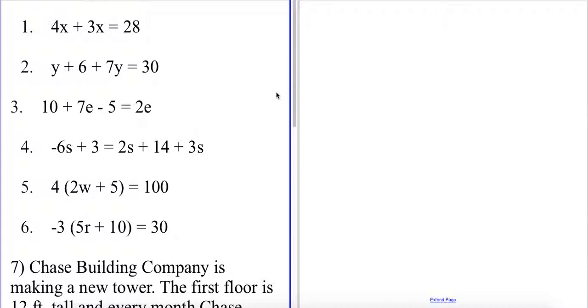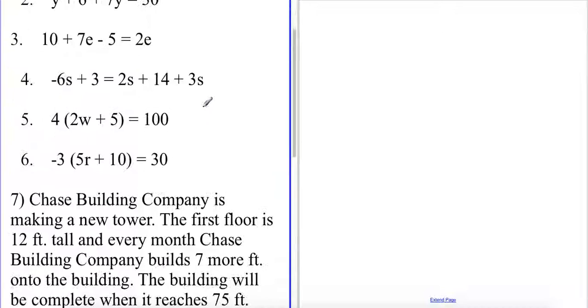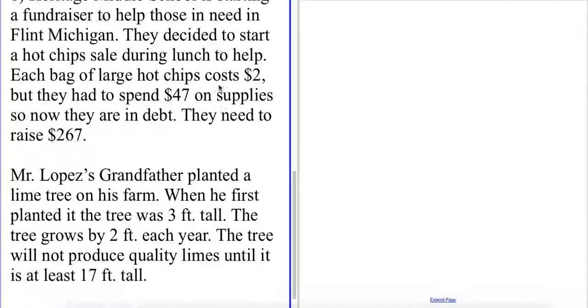In this video we'll be reviewing a few homework problems from the last few weeks. These first six problems will ask us to solve for a missing variable, and I'm going to begin with solving the odds, the odd numbers, so 1, 3, and 5, and then I'll also go over one or two of these word problems as well.